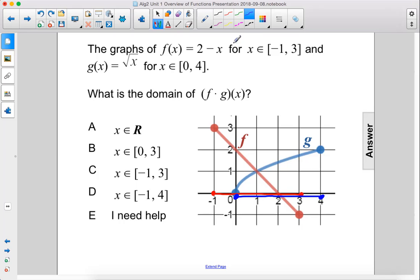All we do to figure out the domain of f times g(x) is see where these overlap, so that would be from 0 to 3. This is the domain of f times g(x), from 0 to 3. The answer is B.